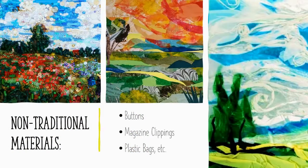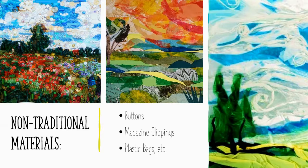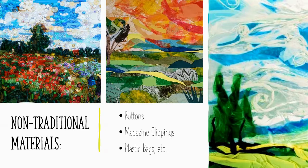Of course, you don't have to use traditional art materials for your Fauvist landscape — you could use non-traditional materials. Here in the top left you can see buttons; in the middle, a collage made out of magazine clippings; and on the right, a landscape actually made out of plastic bags. You really should consider getting creative, especially if you don't have access to a lot of different traditional materials. You can still make a really fabulous landscape.